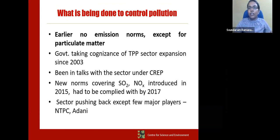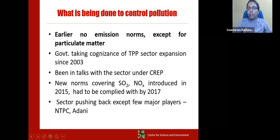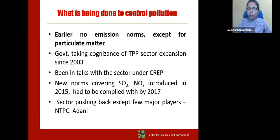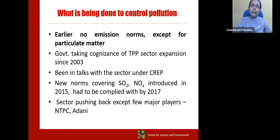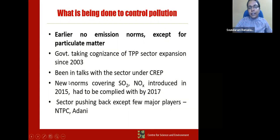Coal power plants are a source of pollution, and we have not taken enough cognizance of it because it was not in as many numbers as it is today. Something has to be done to control pollution from them. The Ministry and the Central Pollution Control Board are the regulators — they set emission limits and norms. Earlier there were only limits for dust, with no limits for sulfur dioxide or oxides of nitrogen. But the government recognized that the thermal power plant sector is expanding, and sulfur dioxide going into the atmosphere turns into sulfates and affects us.